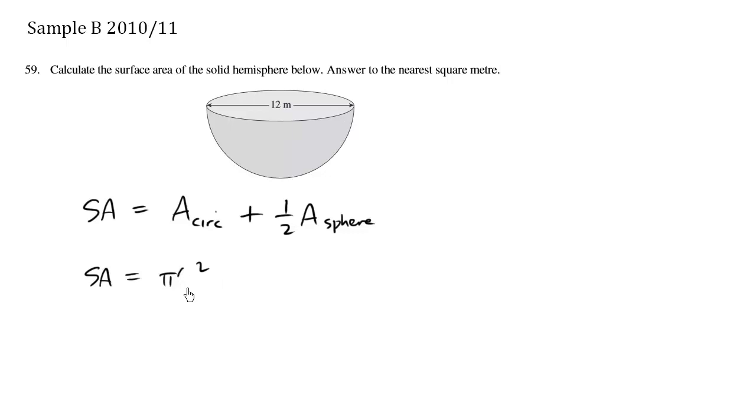So this is 6 squared plus one half the area of a sphere. We're only looking at this side part here. The area of a sphere, from the formula on the data pages, is 4 pi r squared. The radius is 6, so that's 6 squared.